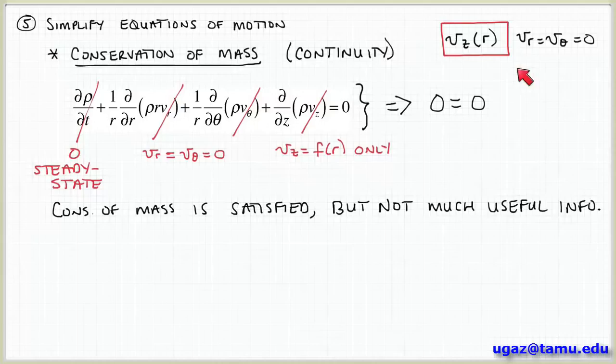This doesn't tell us much useful information, but it does show that we are able to satisfy conservation of mass in the context of this problem. We want to determine the function v_z(r), and we don't have a lot of information from conservation of mass to help make that determination. But that's not the only conservation law we've obtained.